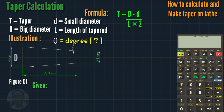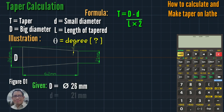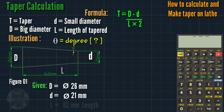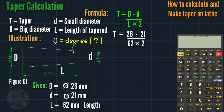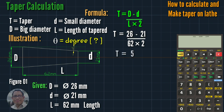So we have given: D is 26 mm on our illustration, small d is 21 mm, and L is 62 mm. So T equals 26 minus 21, divided by 62 times 2. 26 minus 21 is 5.